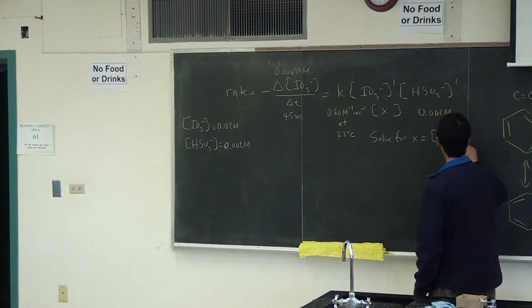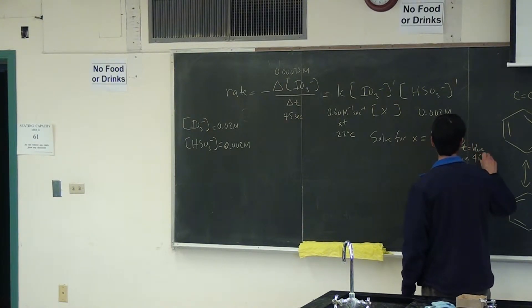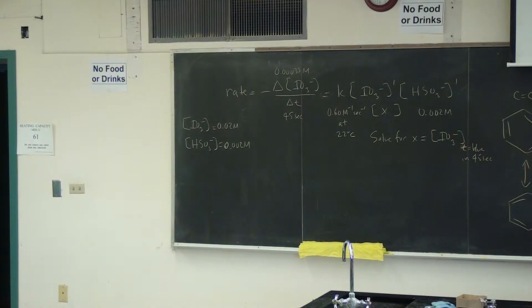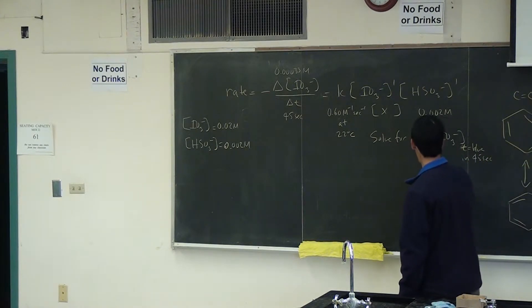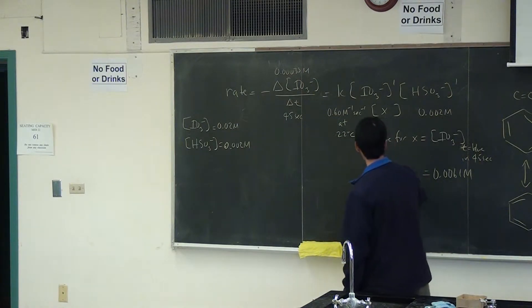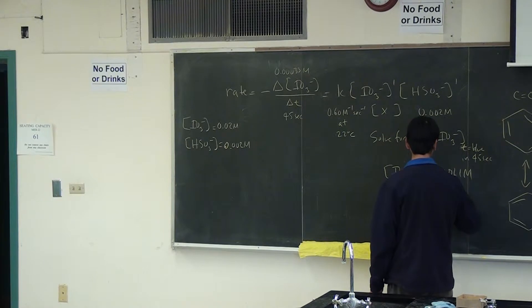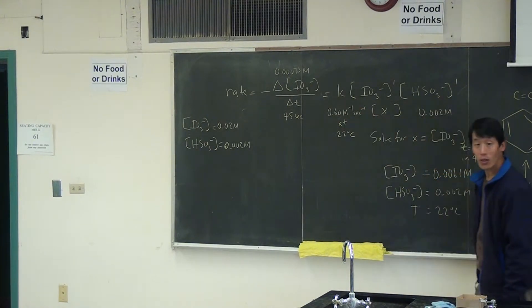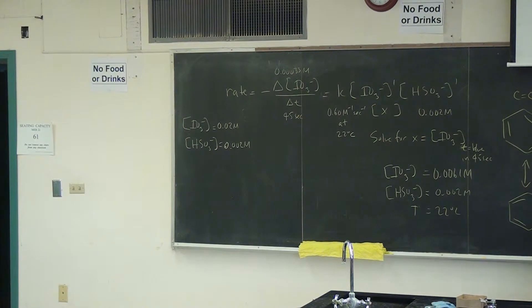that will give you the concentration of IO3 minus to make the solution turn blue in 45 seconds. And if you did it this way, the answer was 0.0061 molar. So the answer to this question was that IO3 minus is 0.0061 molar, HSO3 minus is 0.002 molar. And the temperature conditions, or the temperature which is for this rate constant, that's 22 degrees. Okay, so that's one way to do it. Another way to do this...